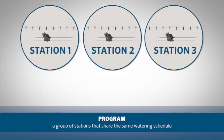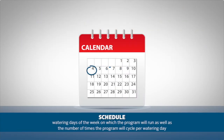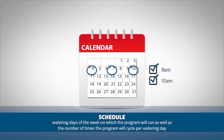A program is a group of stations that share the same watering schedule. By schedule, we mean the watering days of the week on which the program will run, as well as the number of times the program will cycle per watering day.